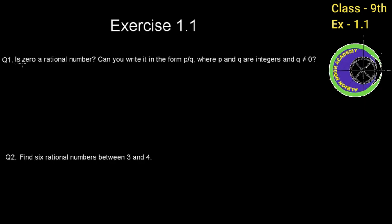Question number one: Is 0 a rational number? Can you write it in the form of P by Q, where P and Q are integers and Q does not equal to 0? So we are asking if 0 is a rational number, and if it is, we can write it in the form P by Q, where Q is not equal to 0. This is the condition for a rational number.